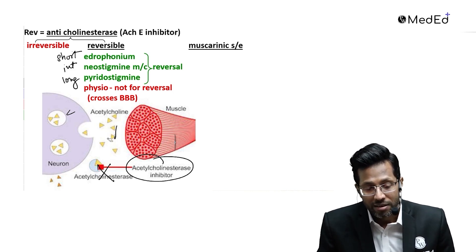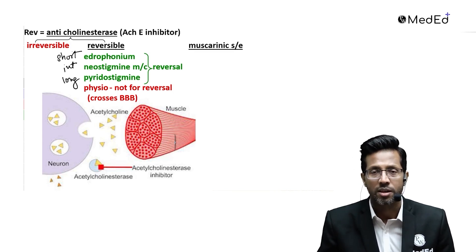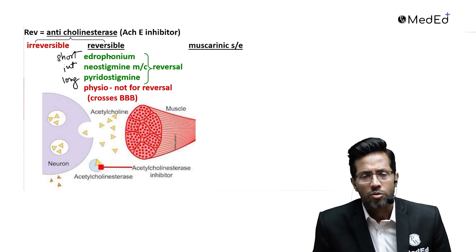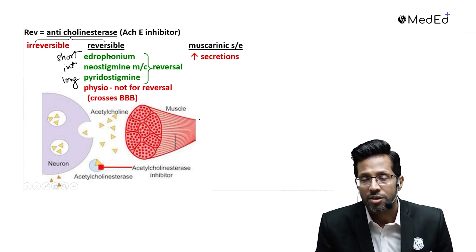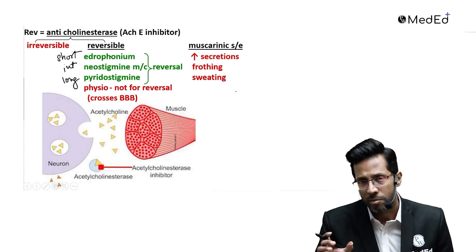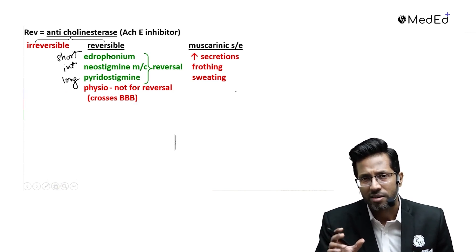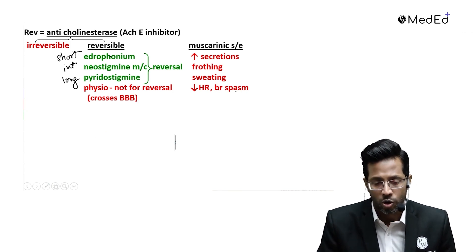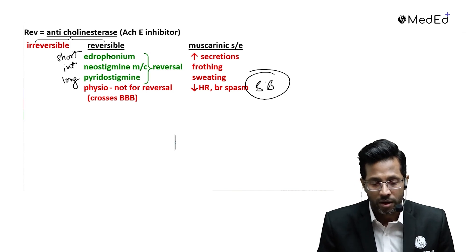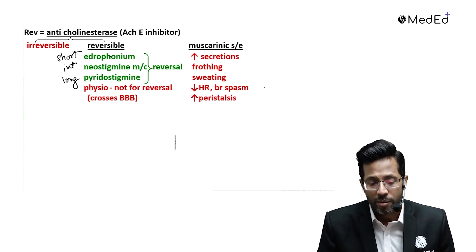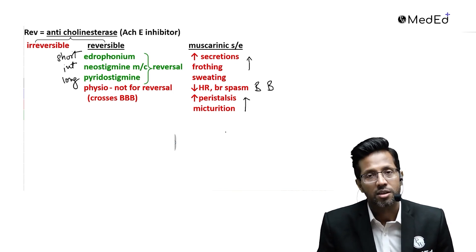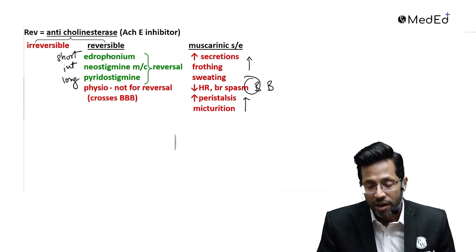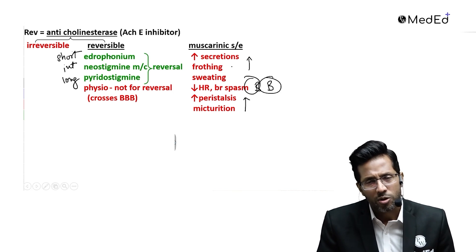Think of what happens in chemical bombing — sarin bombs cause muscarinic side effects. These muscarinic side effects include: increased secretions, frothing, and sweating everywhere in the body. For the cardiovascular system: bradycardia and bronchospasm — remember the mnemonic BnB. Additionally, there is increased peristalsis and increased micturition.